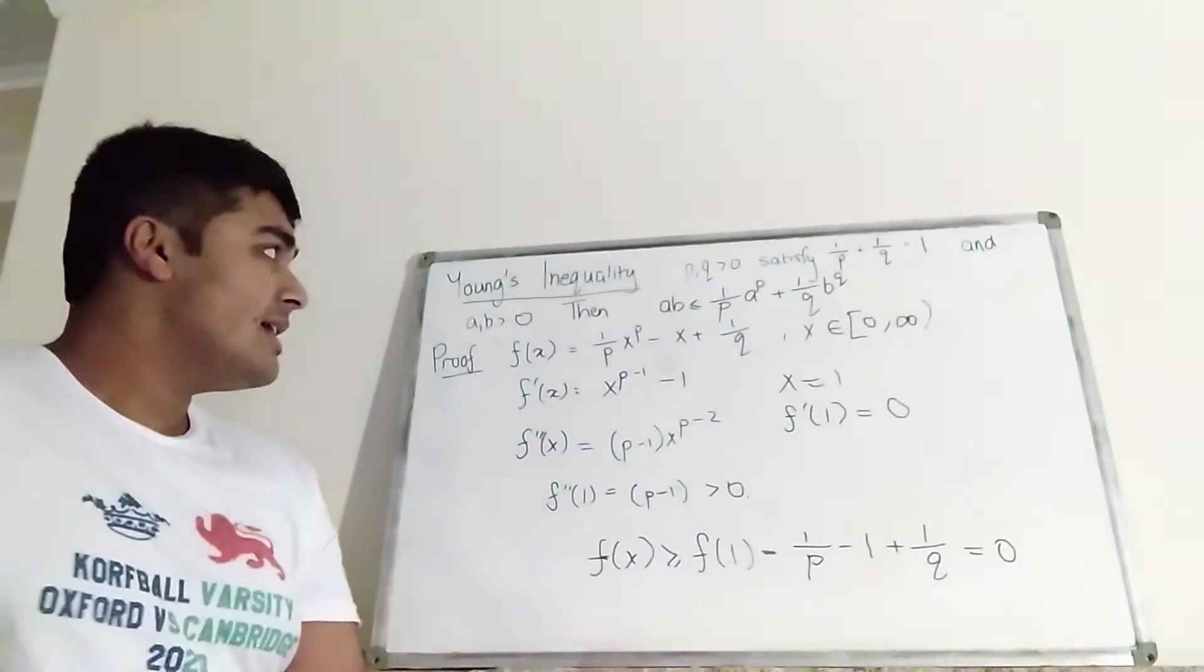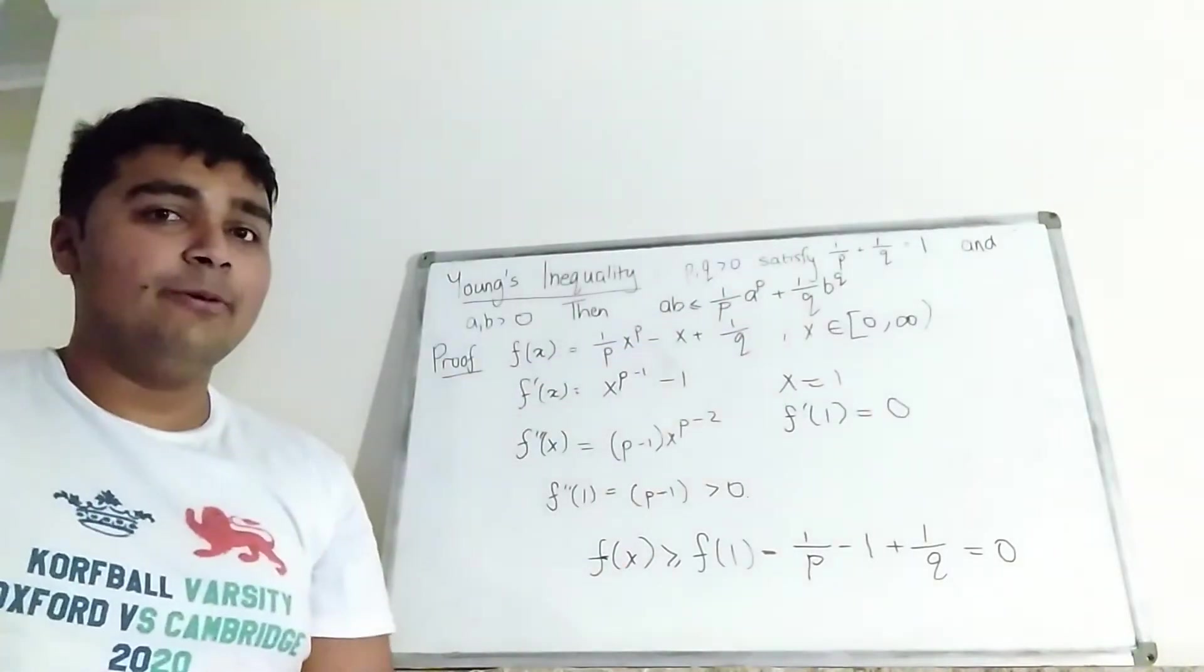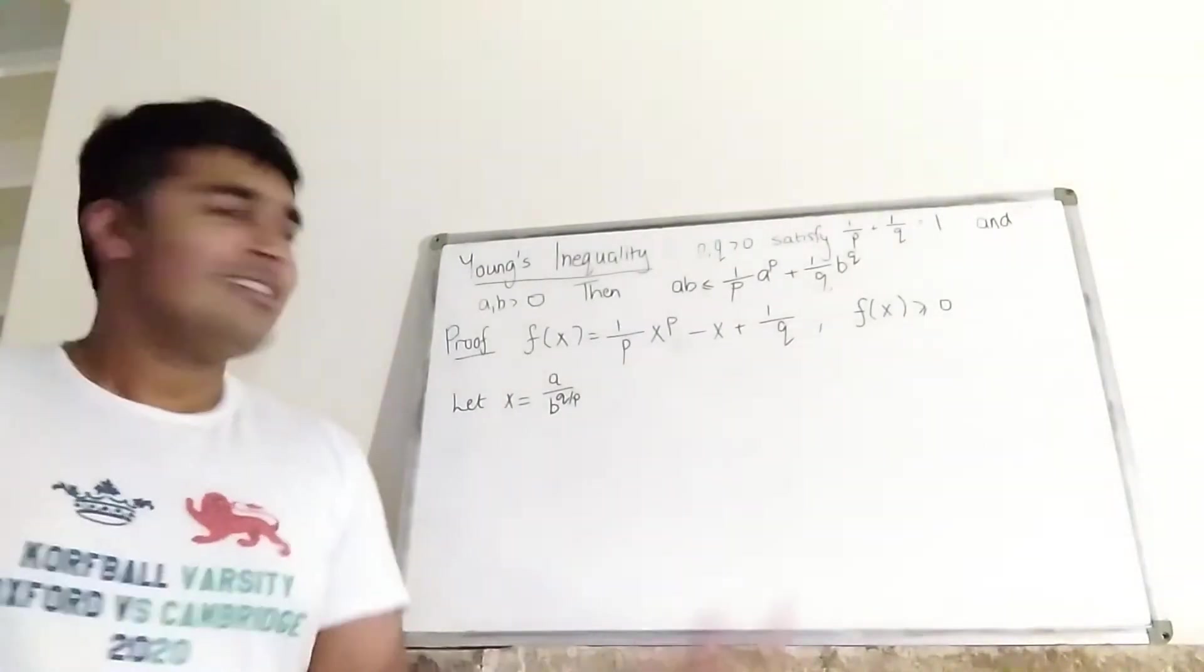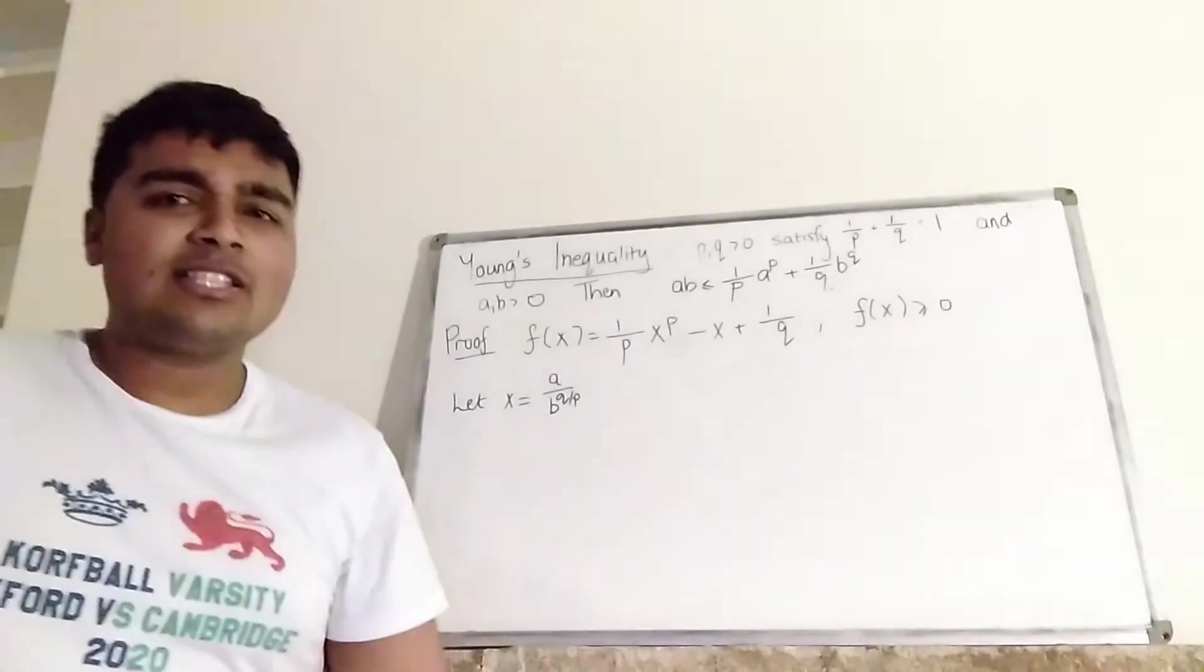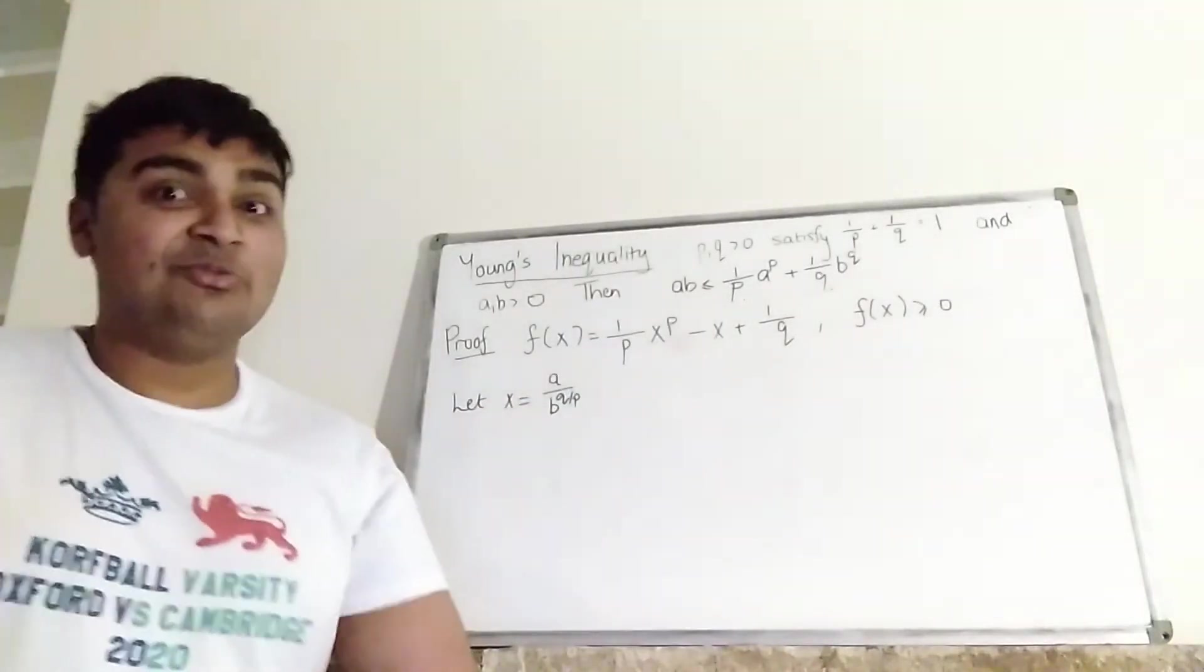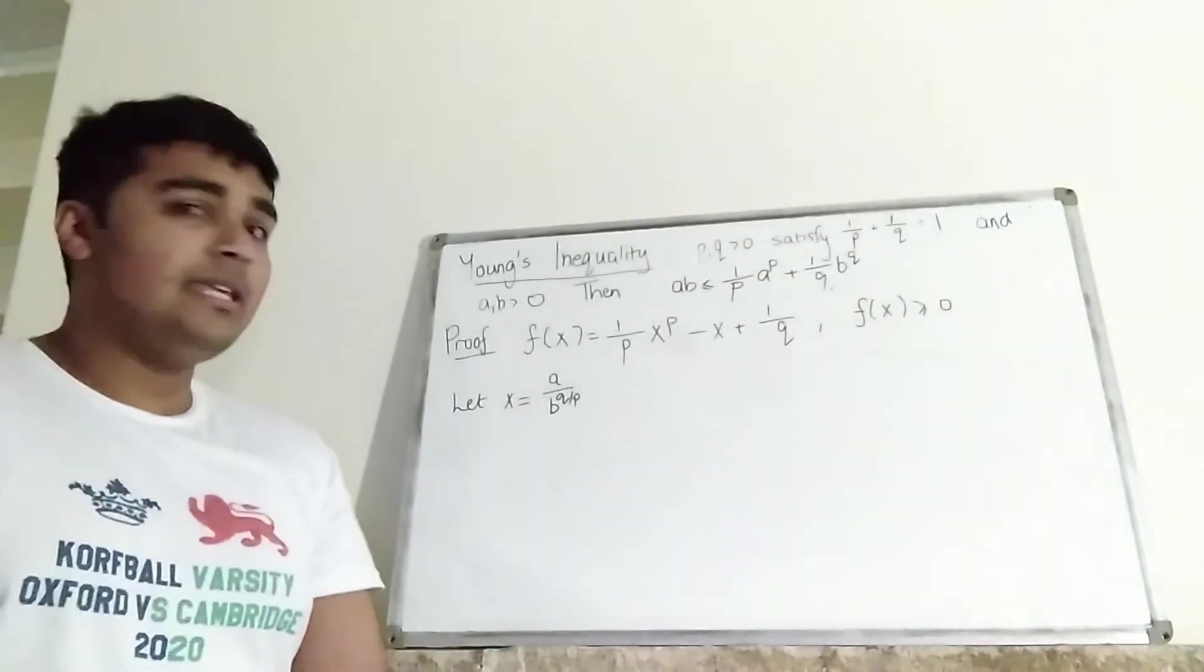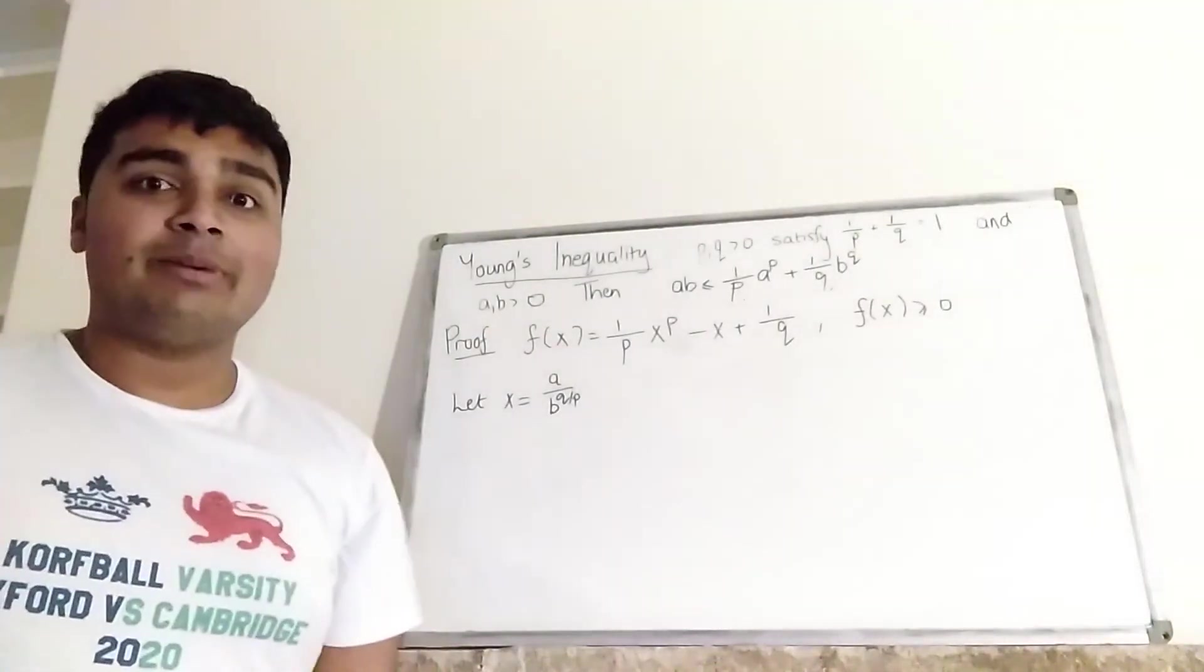Now, we're going to use this inequality here to get Young's inequality by choosing the right input. Okay, so you may be wondering which input we put into our f to derive Young's inequality. And so you play about with a few inputs and you realize that this is the special one. I think I'm a special one. The reason for that is, well, let's plug it in and we'll see, I guess. But firstly, what are we plugging in? X equals A divided by B to the power of Q over P. And now firstly, I'm going to make an observation about Q over P.